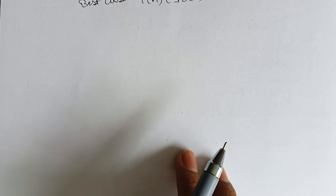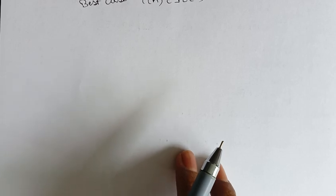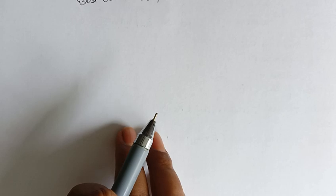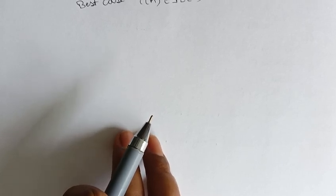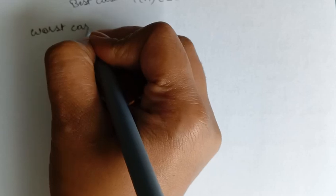Now we will see the worst case efficiency of binary search algorithm. The worst case is when the key is not found, or when the key element is present at the end of the array. Before going into the worst case efficiency, we have to write the general form.